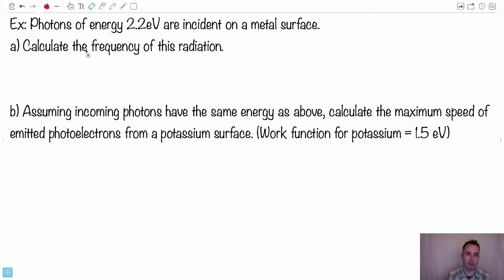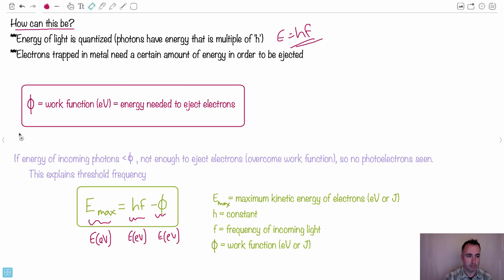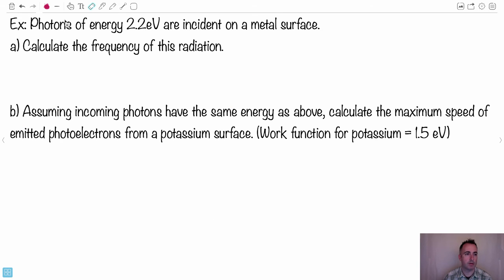So now we have an example. We have photons with an energy of 2.2 eV each incident on a metal surface. First, let's calculate the frequency of this radiation. We want the frequency of these photons. These photons have an energy of 2.2 eV. In order to do frequency we're going to use the equation E equals HF. Then F equals E over H. We know H is 6.63 times 10 to the minus 34. But I need to know what is the energy? I need this in joules.